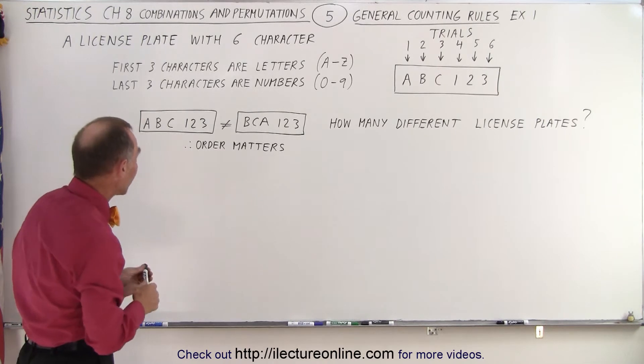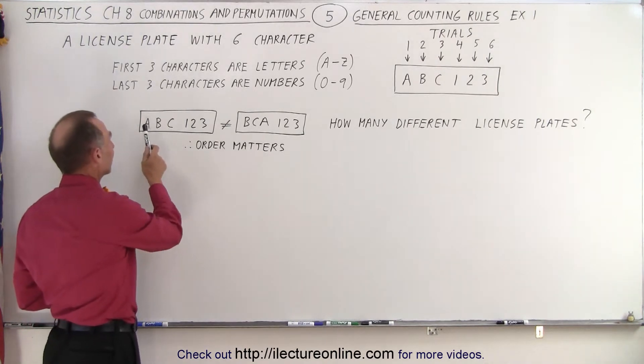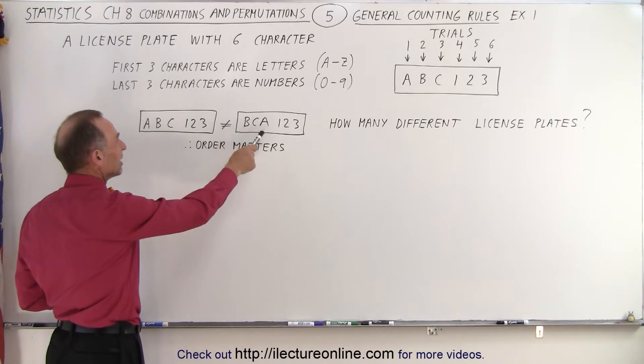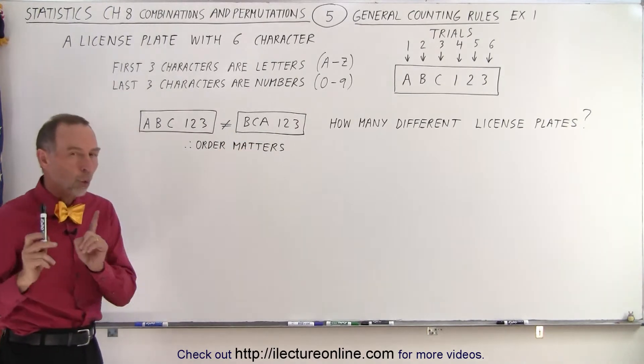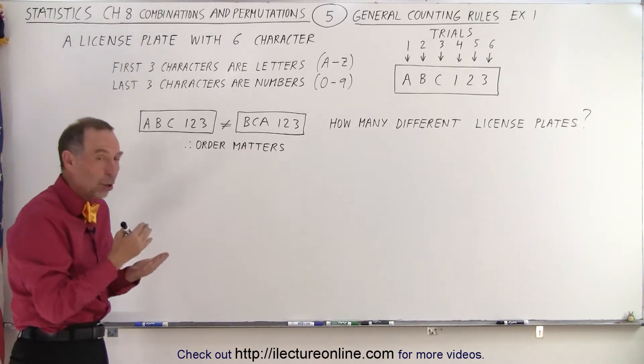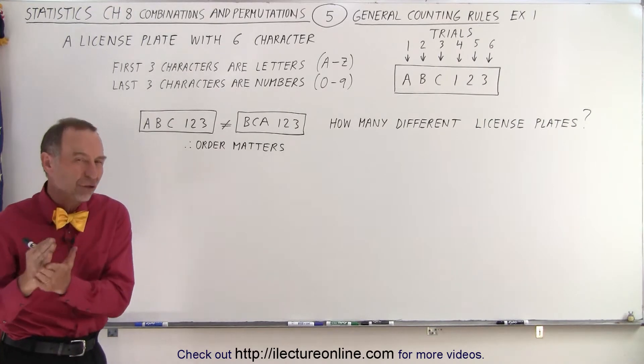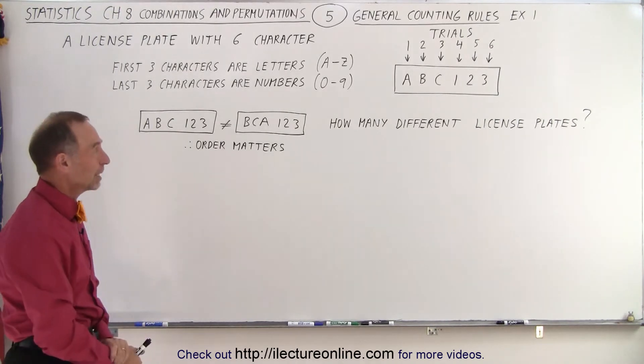And notice that if we have a license plate that has ABC 123 that's not the same as BCA 123. In other words order does matter so essentially we're looking for the number of permutations not for the number of combinations.